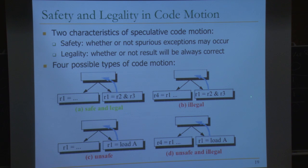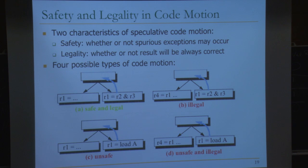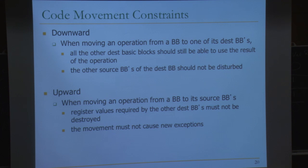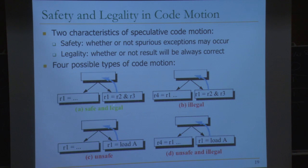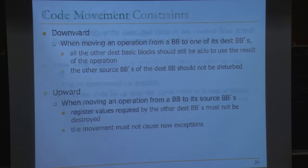If you can enlarge the blocks at compile time by finding the frequently executed paths, you can ease this problem. If the branch didn't get in the way and you know this path is taken 99% of the time, you can move instructions assuming the branch didn't exist. Block enlargement enables optimizations that would otherwise be unsafe and/or illegal.